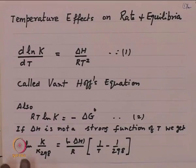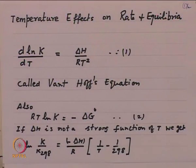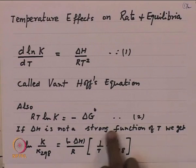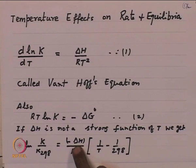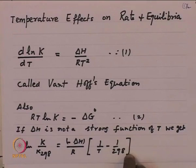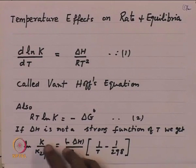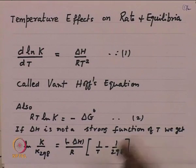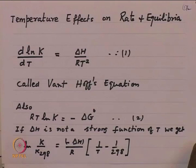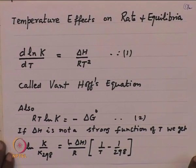Let us see what it means from the point of view of application to various situations. If delta H is positive — which means it is an endothermic reaction — as temperature rises above 298, this term is negative and the term outside is also negative. So the whole term is positive, implying that ln(K/K₂₉₈) is positive. K at any temperature greater than 298 is much greater than K₂₉₈, showing that the equilibrium constant for an endothermic reaction keeps increasing with temperature.